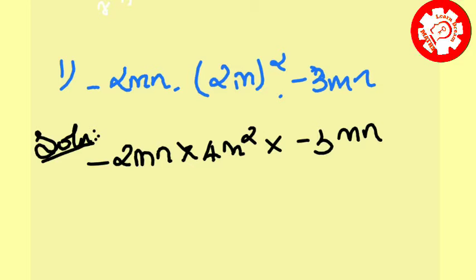Okay, so now first step: multiply the signs. Minus into plus minus, into minus we add plus. Then second step: multiply the constants. 2 times 4 is 8, 8 times 3 is 24.